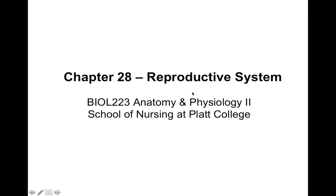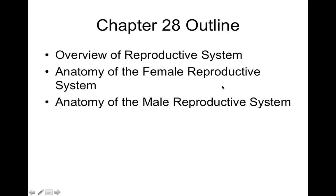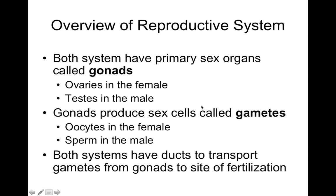In chapter 28, we'll talk about the reproductive system. In this chapter, we'll do an overview of the reproductive system. We'll start with the anatomy and physiology of the female reproductive system, and then move on to male reproductive anatomy and physiology.